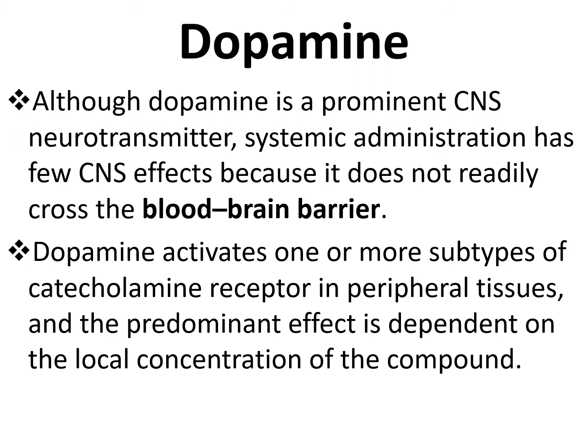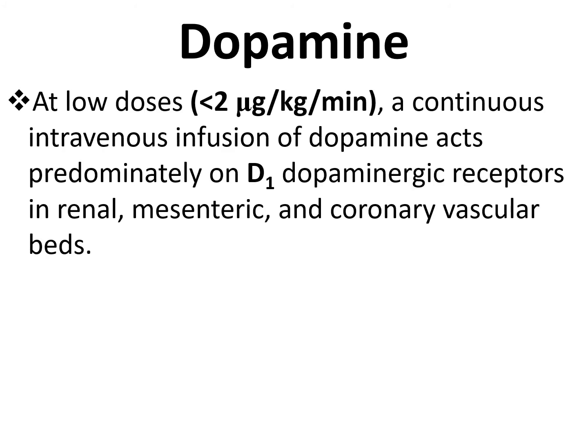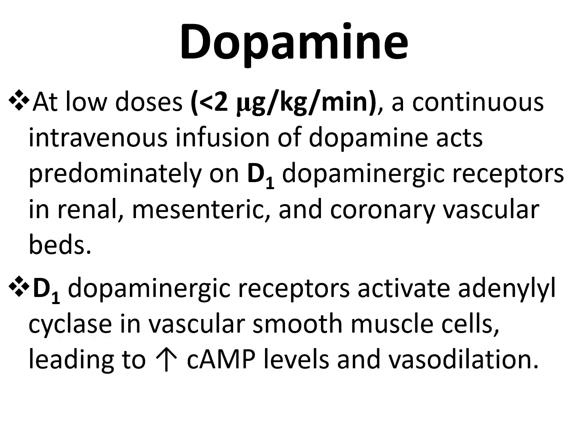In the periphery, dopamine at low physiological doses acts only on dopamine receptors, at higher doses it acts on beta receptors, and at still higher doses on alpha receptors. At low doses — less than 2 micrograms per kg per minute continuous IV infusion — dopamine acts predominantly on D1 dopamine receptors in renal, mesenteric, and coronary vascular beds, producing vasodilation.